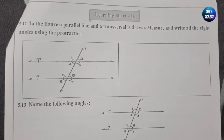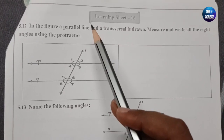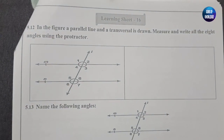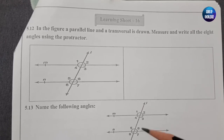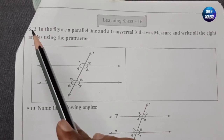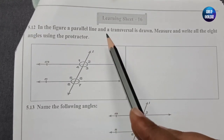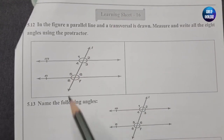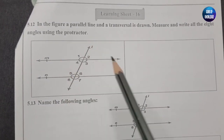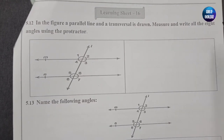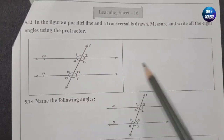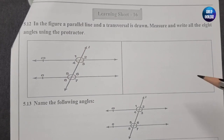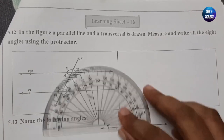Hello everyone, welcome back to my channel Gems of Knowledge. I'm here with another video on Learning Sheet 16 from Kalika Chetarika of Class 9. Before starting, make sure to subscribe to my channel and click the bell button to get notifications. The question shows a parallel line and a transversal drawn. A transversal is a line which cuts two parallel lines. You have to measure all eight angles using a protractor and write the answers in the provided box.